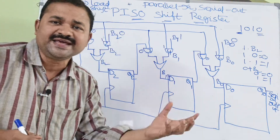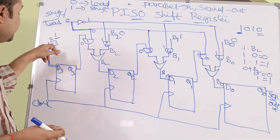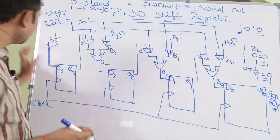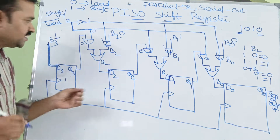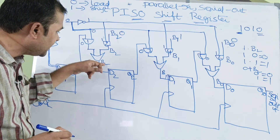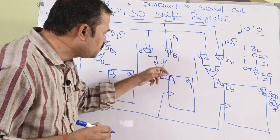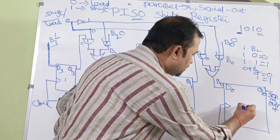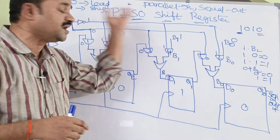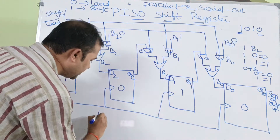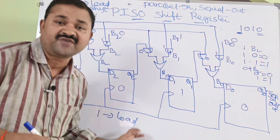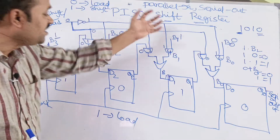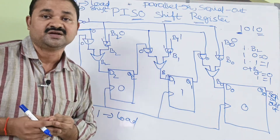During load operation, the register stores 4 bits: B3=1, B2=0, B1=1, B0=0 are loaded into the flip-flops. Only 1 clock pulse is required to perform the load operation. So if the inputs are 1, 0, 1, 0, after one clock pulse that content will be loaded into the register.